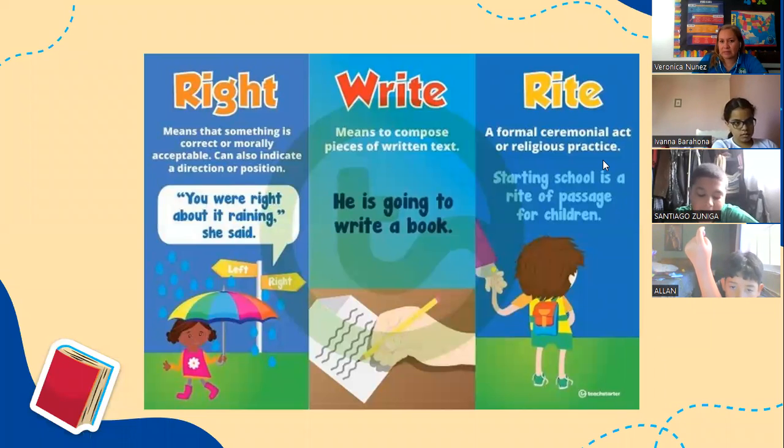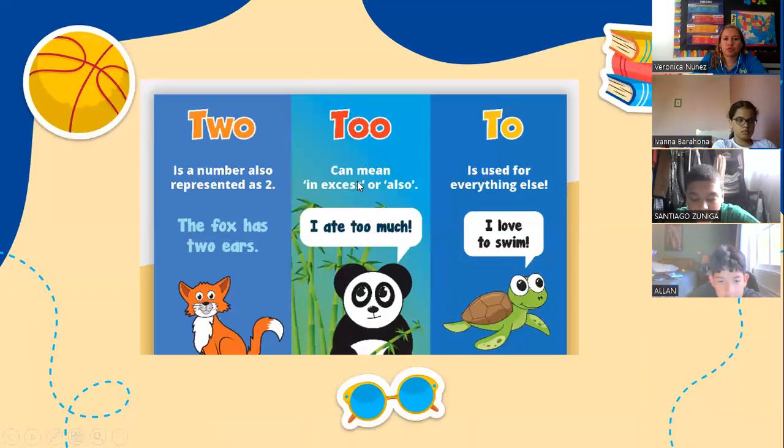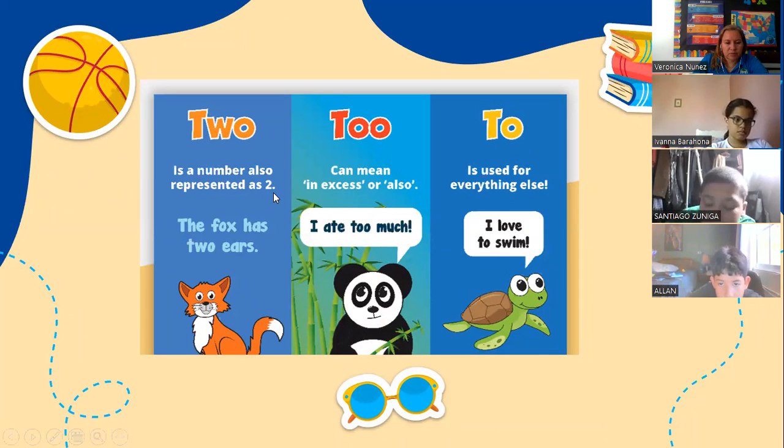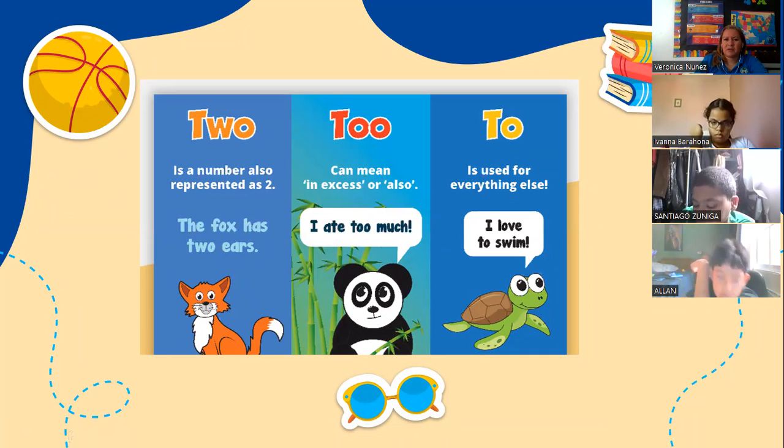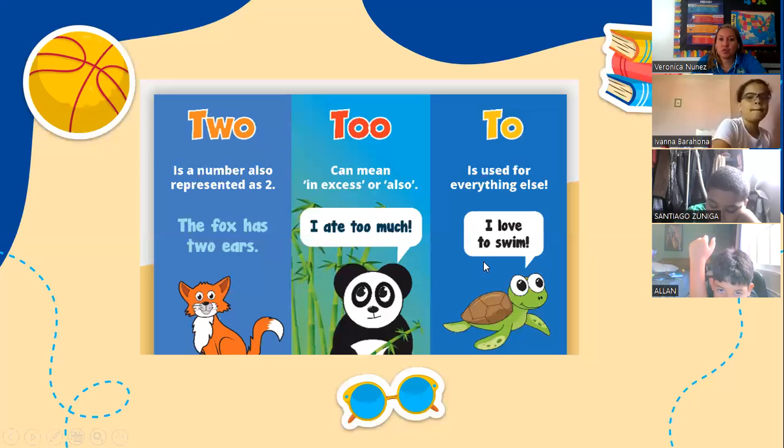Now let's work out another example: two, too, to. Two is a number also represented as this. The fox has two ears. Too can mean in excess or also. I ate too much. See, it means that we ate more than we need, too much. To is used for everything else. I love to swim.